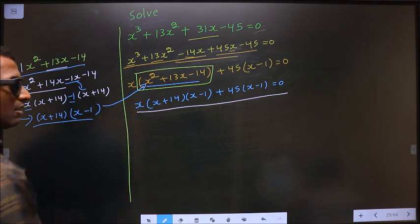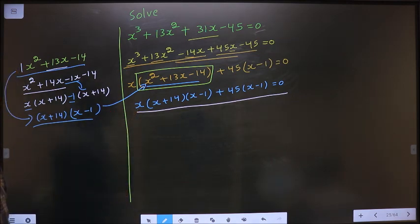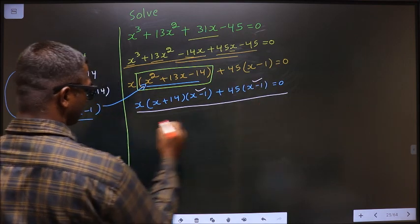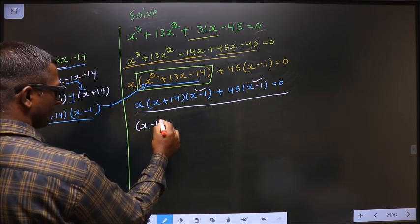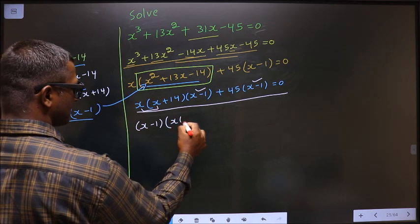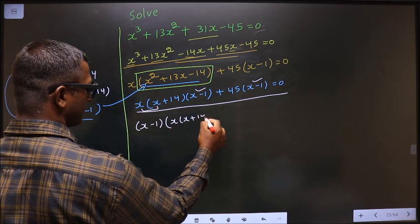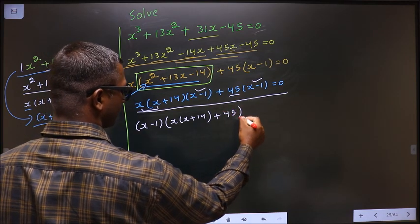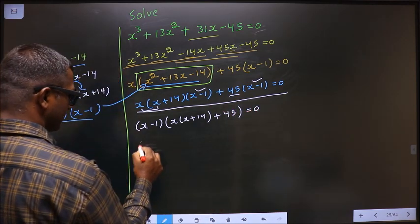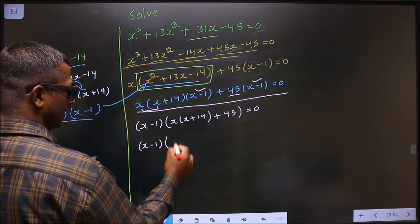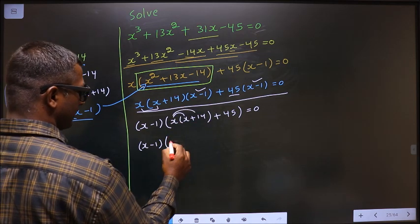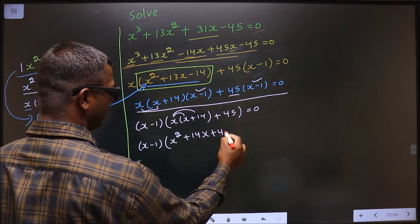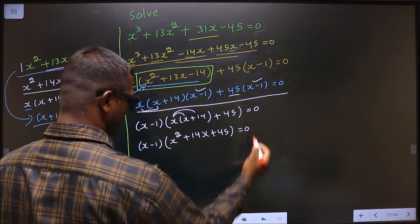What can I take out common in this entire equation is x minus 1. So here I get x times x plus 14, and here I get 45, equal to 0. Opening up the bracket, we get x square plus 14x plus 45 equal to 0.